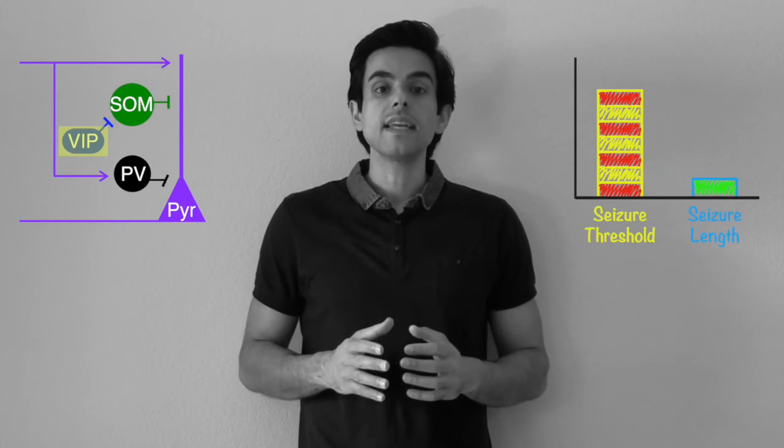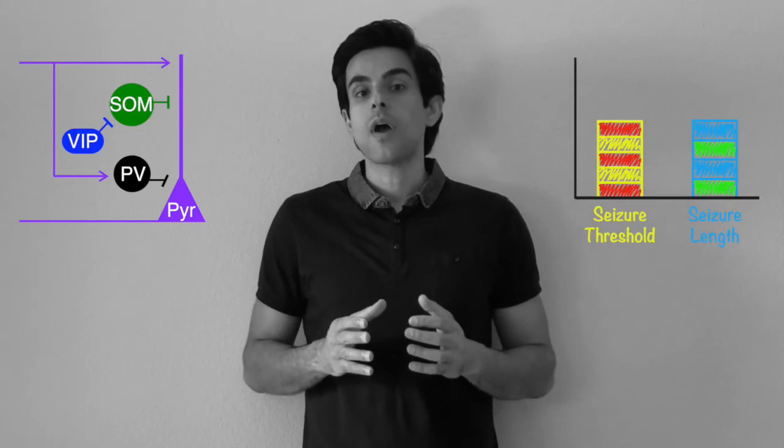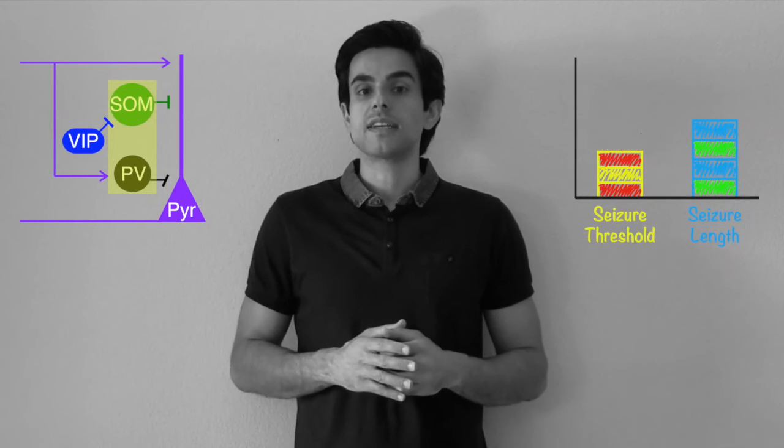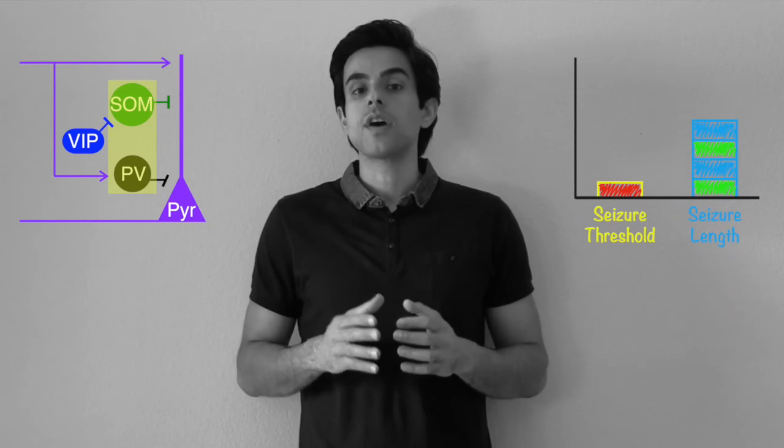This finding is consistent with the disinhibitory role of VIP interneurons. On the contrary, silencing parvalbumin and somatostatin interneurons decreased the optogenetic seizure threshold. However, it also decreased seizure length. Interestingly, when we inhibited parvalbumin and somatostatin populations individually, we saw different effects. This is suggestive of the complex and dynamic role for parvalbumin and somatostatin interneurons during seizure.